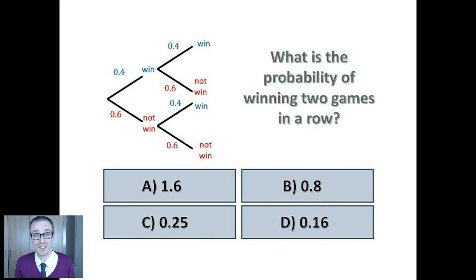Now compare that to the child who answers B, 0.8. What have they done? Well they've added 0.4 and 0.4 together. Is that a misconception with decimals? I don't think so. That's a misconception with probability and dealing with tree diagrams. A different misconception.